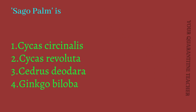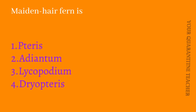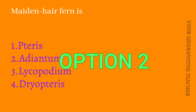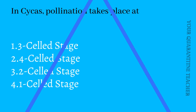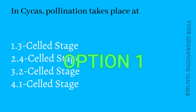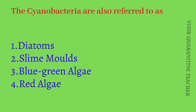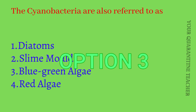Next question on Sago palm. Pollination takes place at the three-celled stage. Then, next important question: Cyanobacteria are also referred to as Option 3 Blue Green Algae — correct answer.